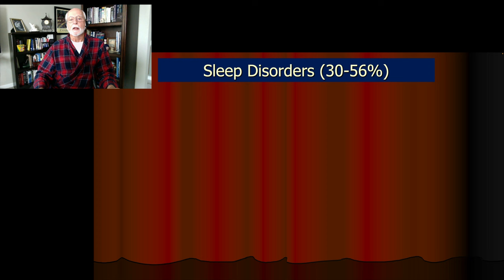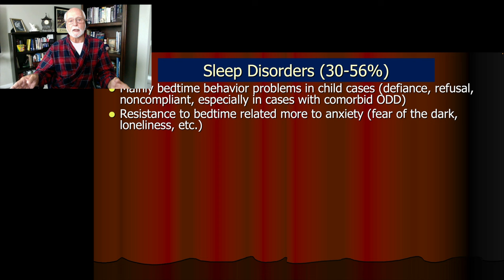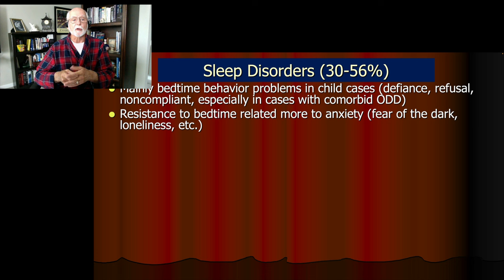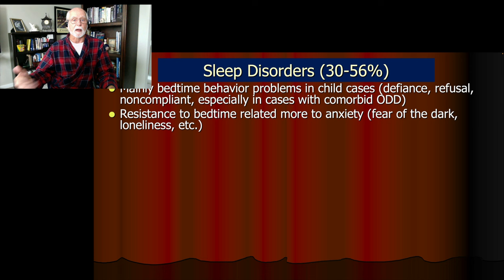First of all, in the case of children especially, what we often see is that there are bedtime behavior problems — not sleeping difficulties technically, but problems with the bedtime routine. Especially with children that have oppositional disorder or anxiety disorder, we may find that they're more defiant at bedtime, refuse to go to bed, ignore requests to get ready for bed, and wind up staying later and later, leading to conflict and arguments at bedtime. These can be dealt with through traditional behavioral parent training programs, like the kind I have in my book, 'You're a Defiant Child.'